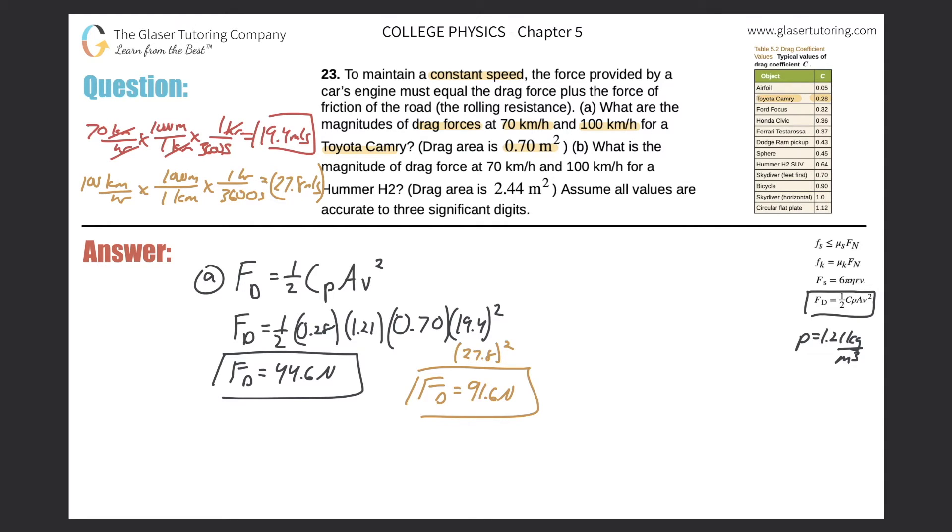Now take a look at letter B. What is the magnitude of the drag force at 70 kilometers per hour and 100 kilometers per hour for a Hummer H2? Here's now the new drag area. Let's do letter B.